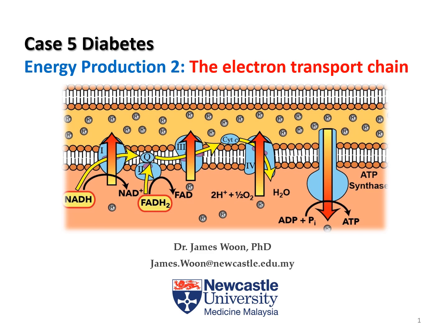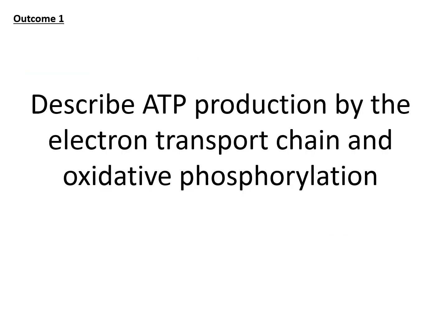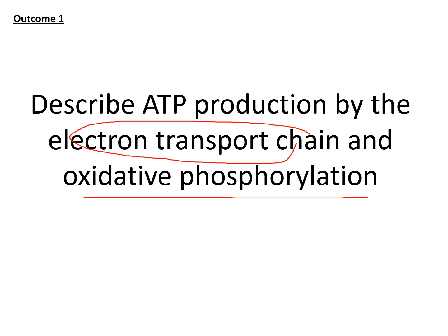Hello everyone. In this session we will talk about part two of energy production, which is the electron transport chain. The first learning outcome is oxidative phosphorylation. The electron transport chain refers to the structure of proteins by which the chemical reaction of oxidative phosphorylation is happening.